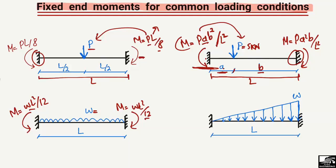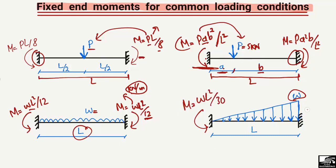w is the load in kilonewton per meter or newton per meter — it should always be a uniformly distributed load — l is the total length of the beam, and 12 is the constant. When there is a triangular load w acting on the beam, the moment values are different: the moment at the left support is equal to wL²/30, and the moment at the right support is equal to wL²/20. These are the constant values for this beam.